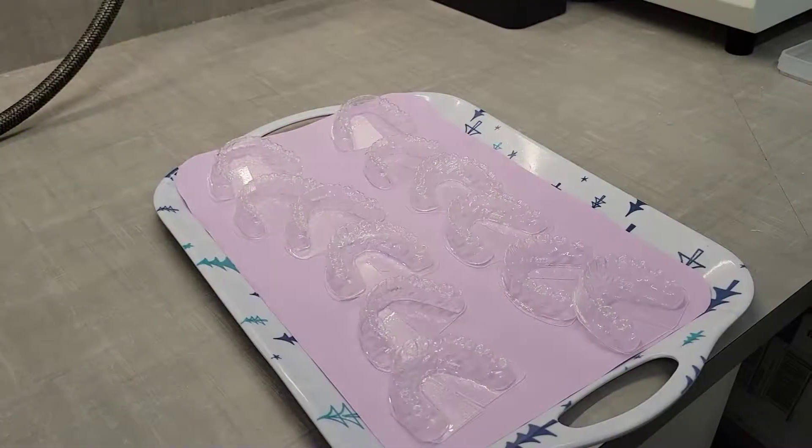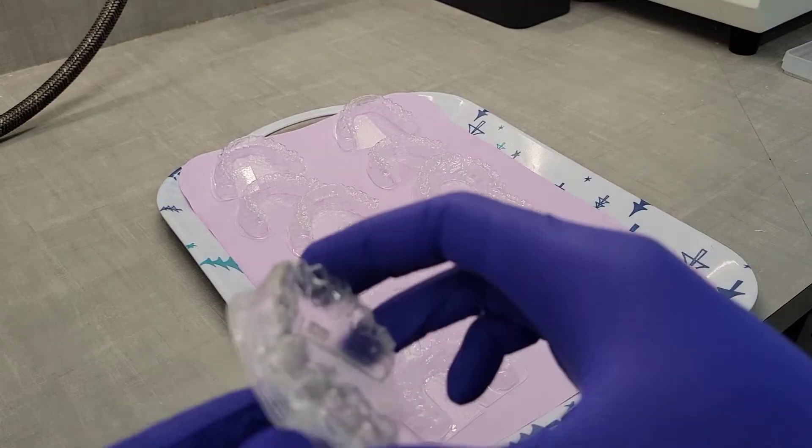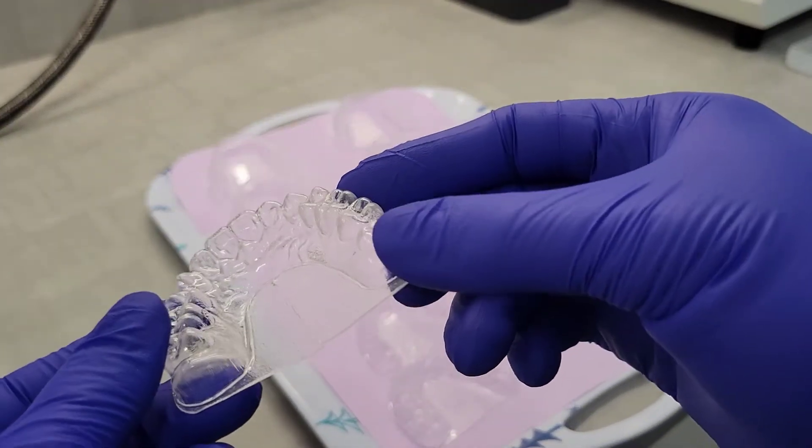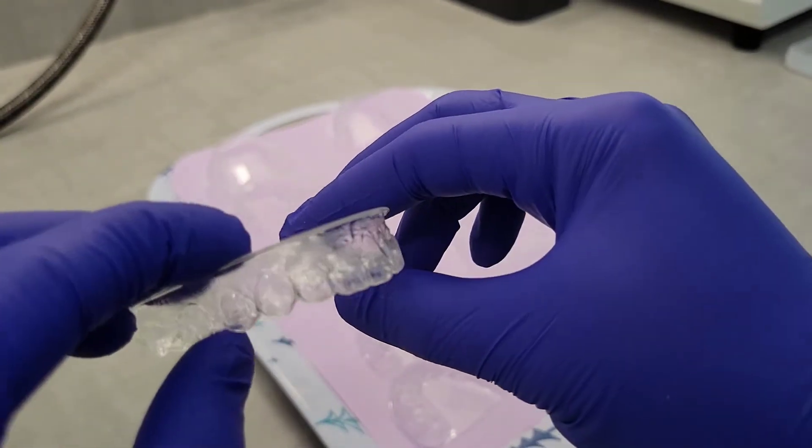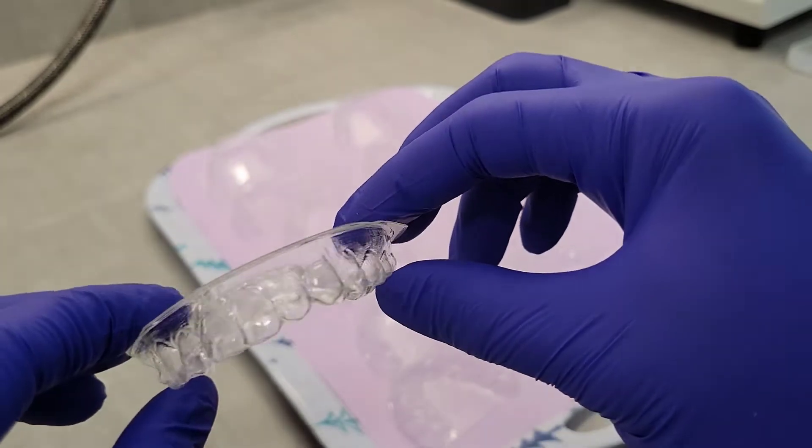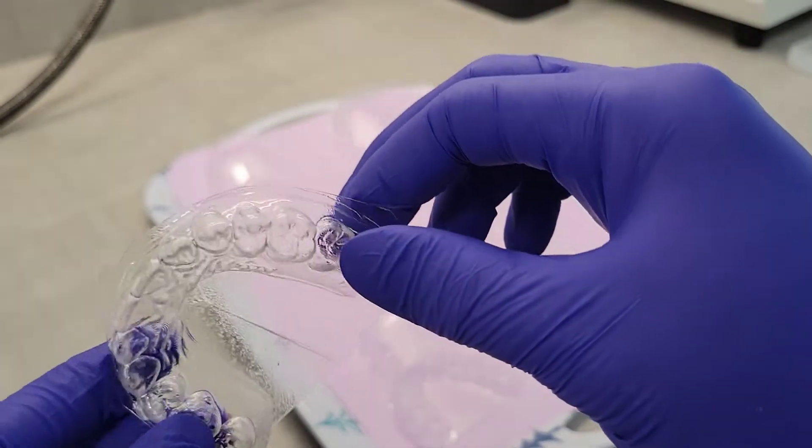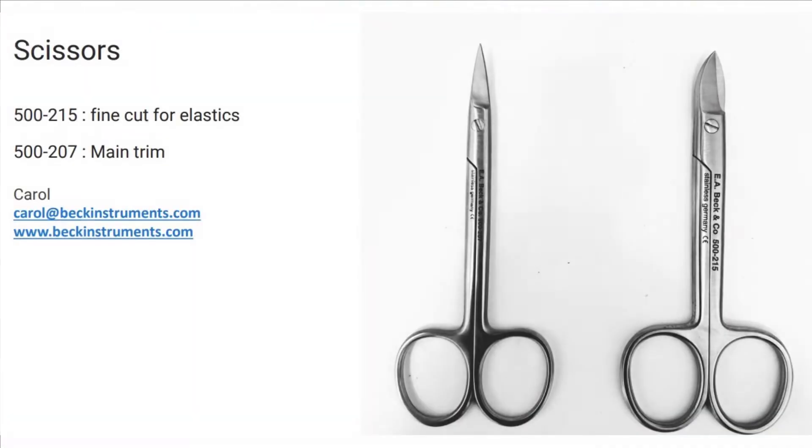Start by looking over the aligner as a whole. Look for any pieces of resin that may have gotten stuck in the plastic and thermoform again if necessary. The idea is to finalize the trim cut of the aligner slightly over the gum. This could change in certain cases and has to be discussed with the orthodontist treating the patient.